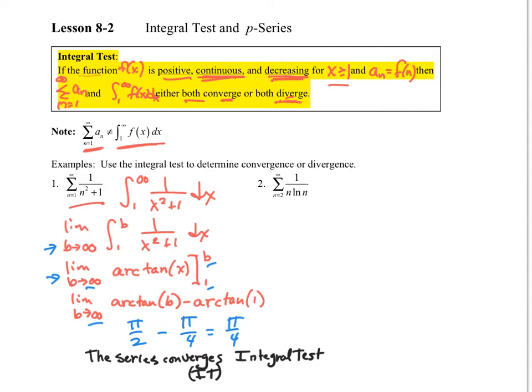Let's look at number 2. We have a similar situation. This is all positive, continuous, and decreasing. If I set up the integral test for this, notice the lower index is 2. Yes, you do have to start with 2.